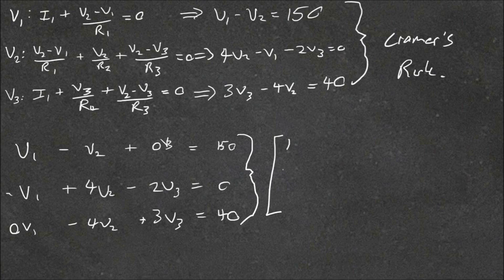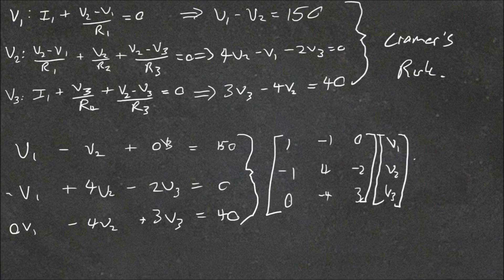So we'll write these in a way that we can put them in a matrix. So for the first one, it's V1 minus V2 plus, we don't have a V3, so we'll call it 0V3 equals 150. For the next one, it's minus V1 plus 4V2 minus 2V3 equals 0. For the last one, it's 0V1 minus 4V2 plus 3V3 equals 40. And putting all this in matrix form, we get 1 minus 1 0, minus 1 4 minus 4, 0 minus 2 3. So that's just the coefficients of these. Our voltages, which is V1, V2, V3, and the solutions, which is 150, 0 and 40.